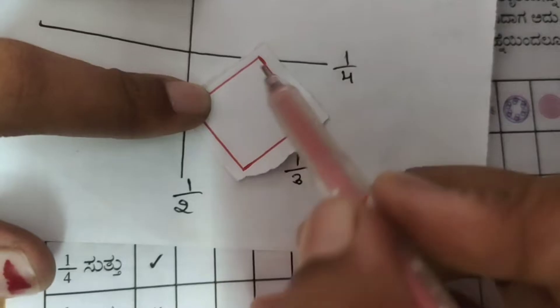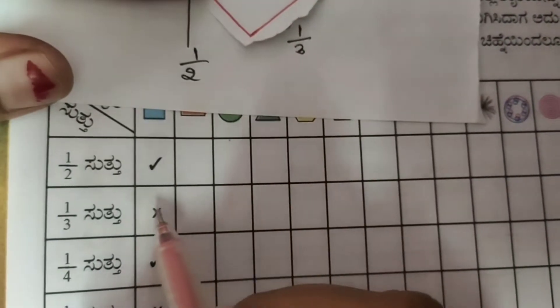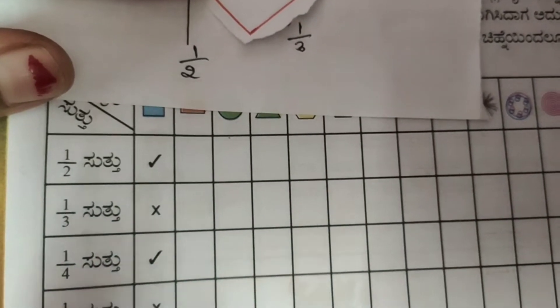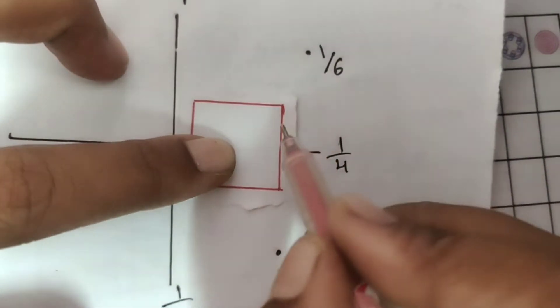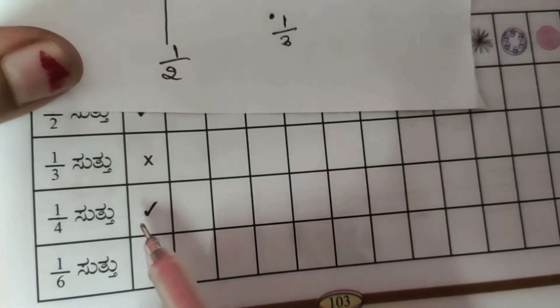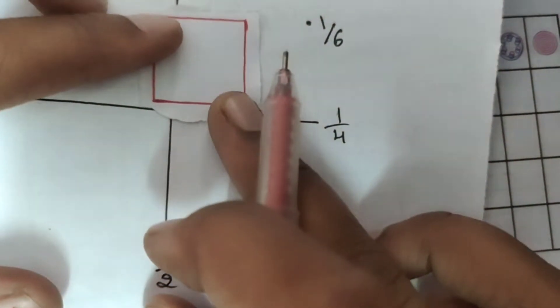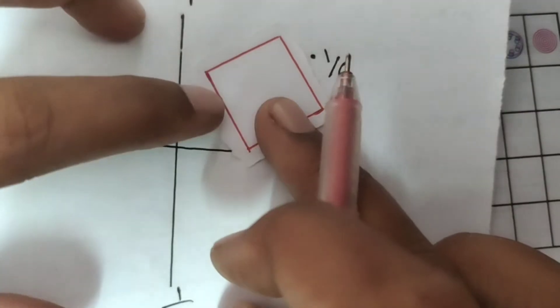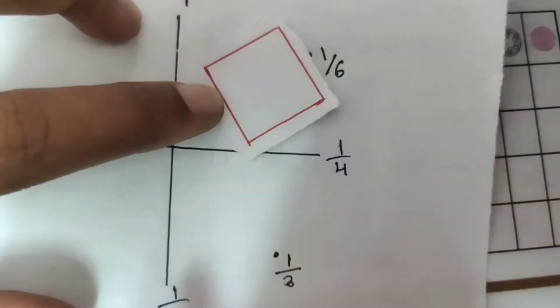1 by 3 — this is not the original figure, so wrong. 1 by 4 — square shape, checking all four 1 by 4 turns — still a square shape.